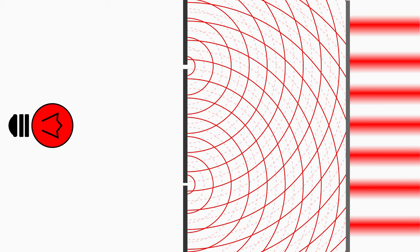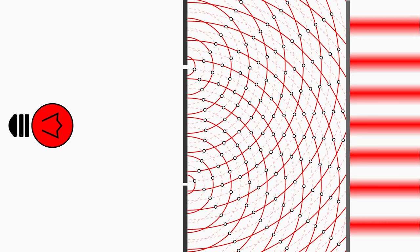And do you know where the waves cancel each other out completely? Exactly, where a solid line intersects a dashed line. These are points where a wave maximum meets a wave minimum.